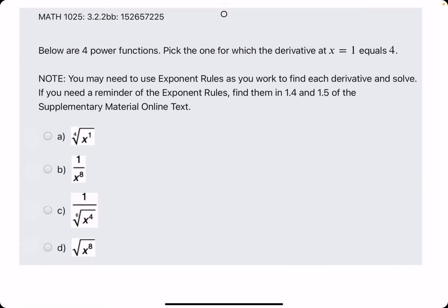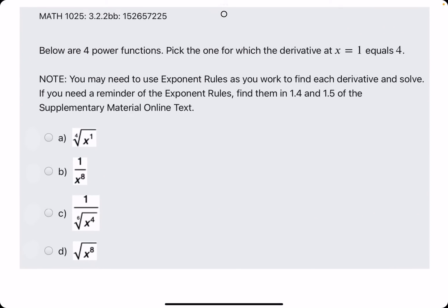Alright, let's go ahead and do one more even faster. We're looking for 4 as our value. And so when we look at this, let's rewrite each of them. We have x to the 1 fourth, x to the negative 8, 1 over x to the 4 over 6, which is x to the negative 4 sixths.